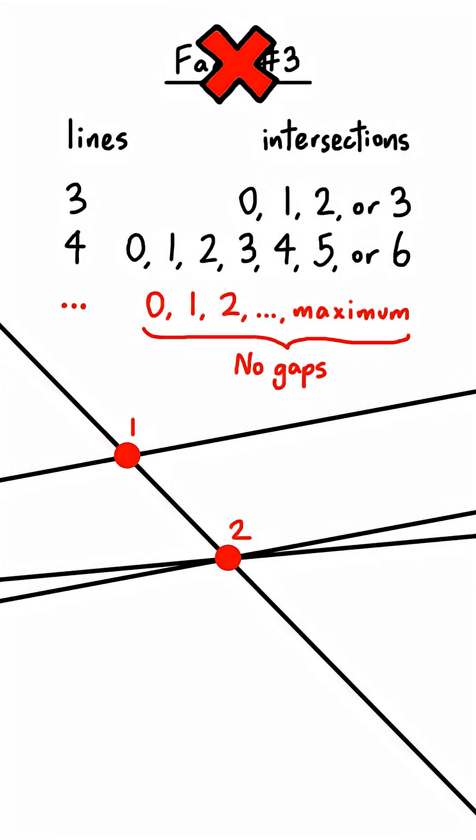So the third fact is fake, and a simple counter example is four lines. It's impossible to get exactly two intersection points. Try it yourself!